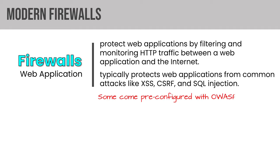An allow list enables us to specify applications that should be allowed to run, typically called an application whitelist. Firewalls, intrusion detection and prevention systems, and endpoint detection and response systems will often give us an allow list feature where we can specify what should be able to run. On the flip side, they may offer a block list or deny list feature that enables us to prevent specified applications from being installed or run. Firewalls, IDS, IPS, and your EDR systems will typically have some sort of block list feature.